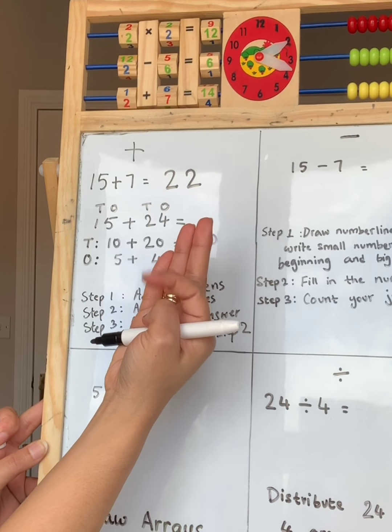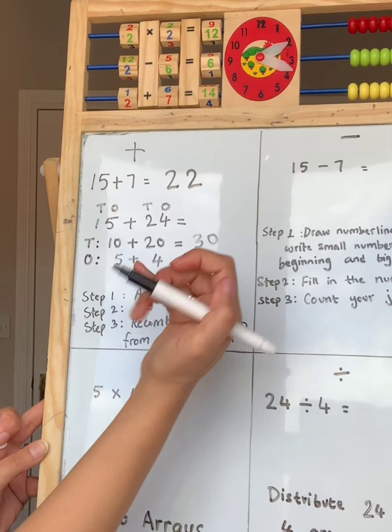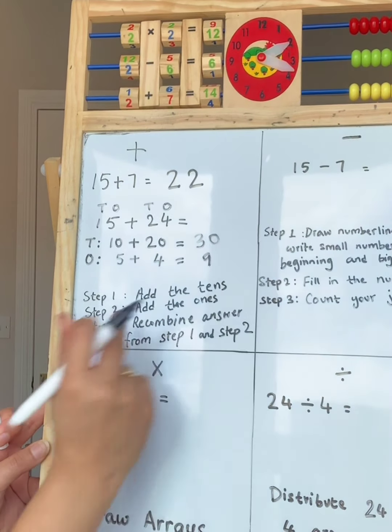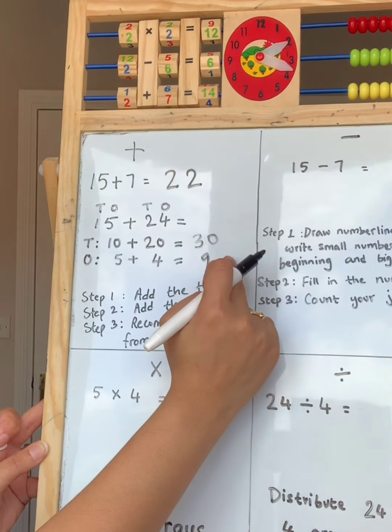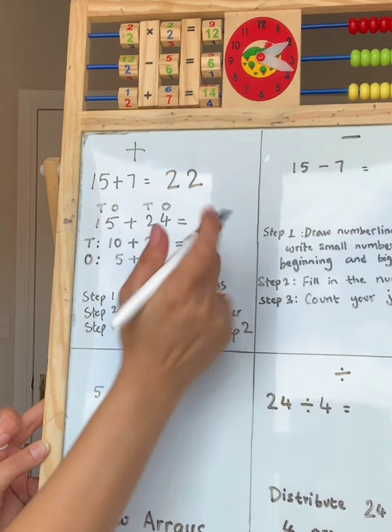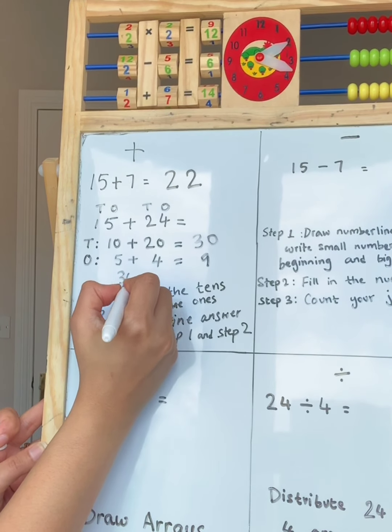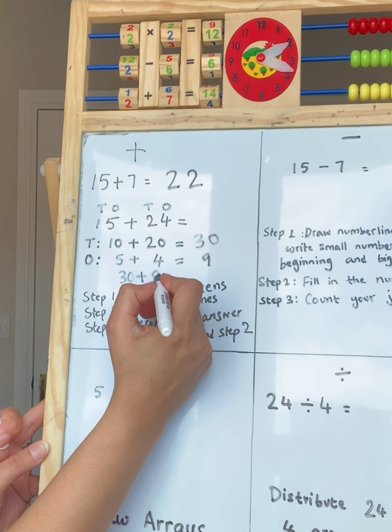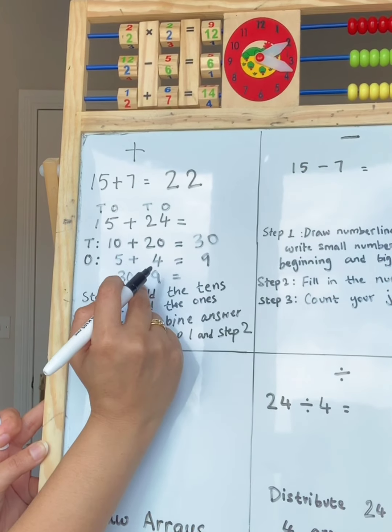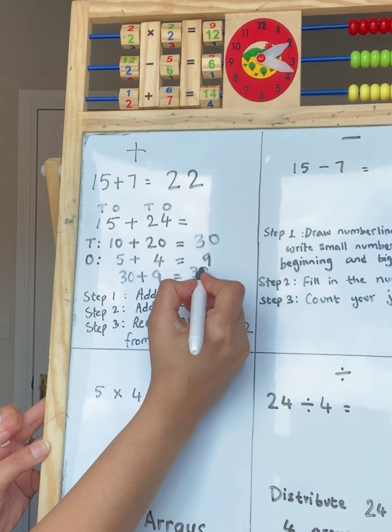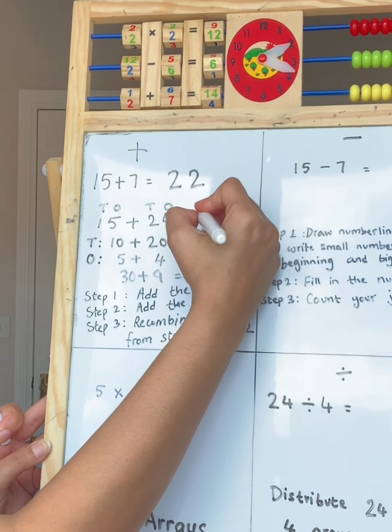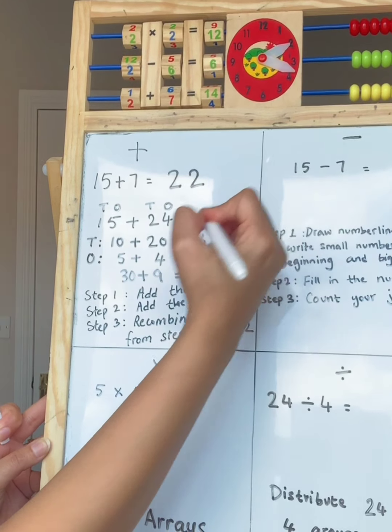5 counting forwards. 6, 7, 8, 9. Step 3. Recombine the answers from step 1 and step 2. Step 1 we have 30. Add 9. 30 and 9 is 39. Well done. 39. So that's our answer. Good job.